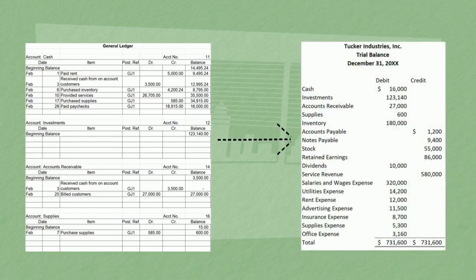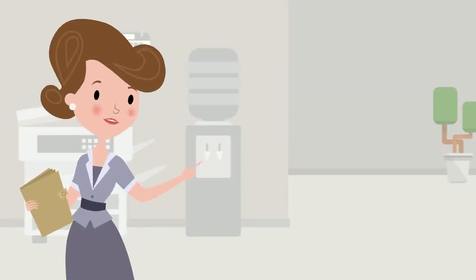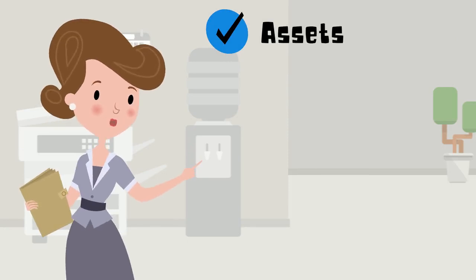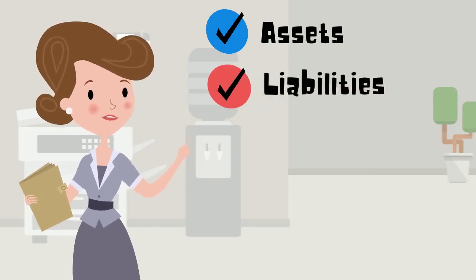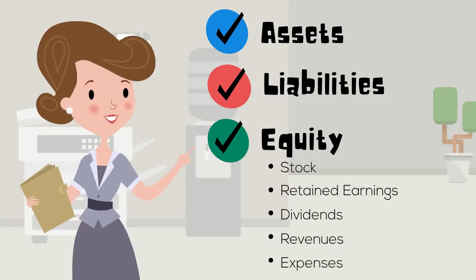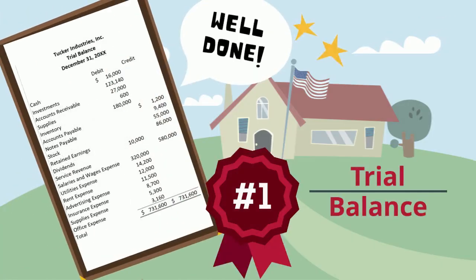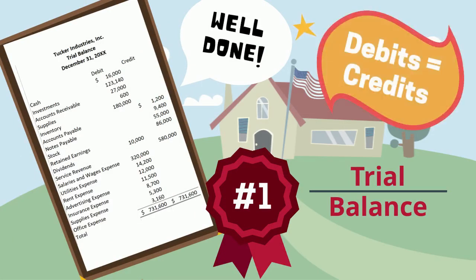We make a listing of all the accounts in the ledger and their ending balances. The trial balance is in the same order as the ledger — assets first, then liabilities, followed by the equities in order: stock, retained earnings, dividends, revenues, and expenses. The end result is a report where we can easily see the balances in every account. The trial balance is also a double check to ensure that all the debits equal all the credits.